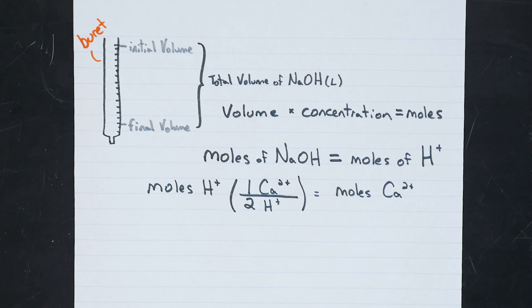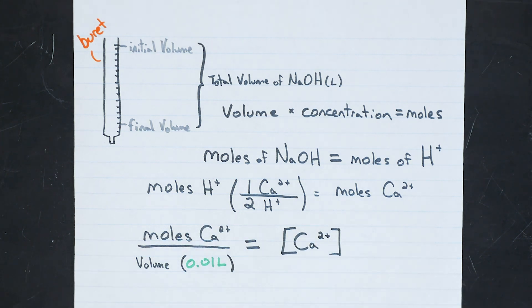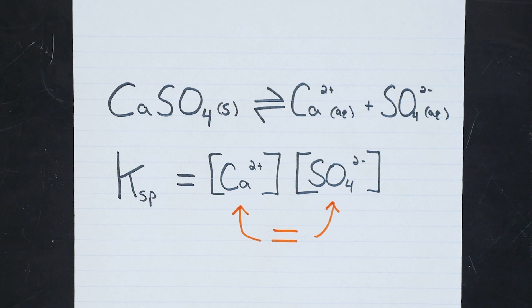Since these resulted from pipetting 10 mils of the saturated solution, we can divide the number of moles by our volume, which is 0.010 liters, and that will give us our final concentration of calcium ions. According to the net ionic equation for the solubility of calcium sulfate, there should be an equal number of moles of calcium ions and sulfate ions. So squaring your final concentration will yield the final KSP value, and you're done.